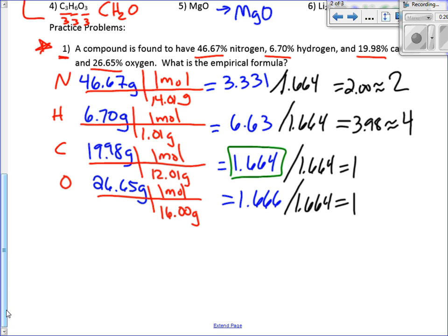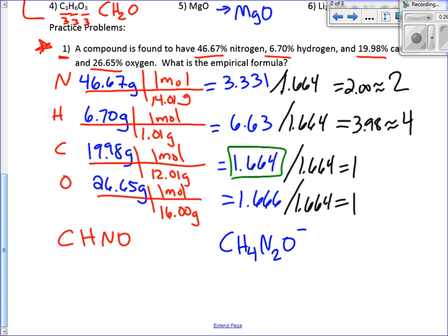Out of these four mole values, the carbon one is the smallest, so we divide everybody by carbon's value. Nitrogen divided gives approximately 2.00, so that's 2. Hydrogen divided gives approximately 3.98, which rounds up to 4. Oxygen divided gives approximately 1. So the empirical formula here is CH₄NO — though note it should be written with C first in organic compounds: C, H₄, N, O. Usually elements go in order by electronegativity in the formula.